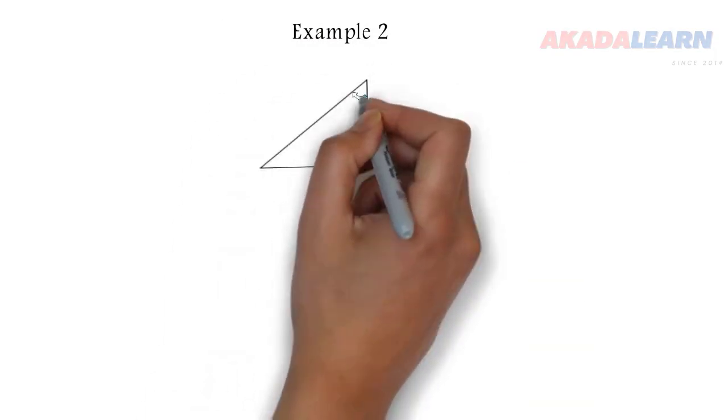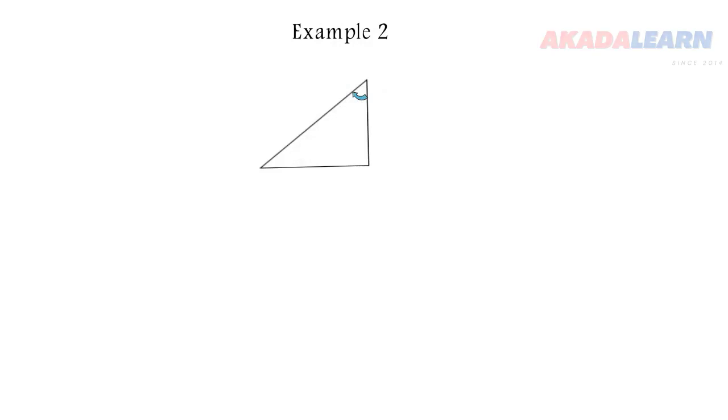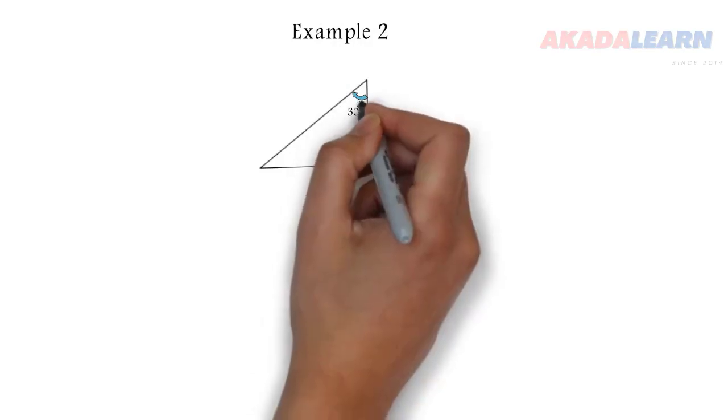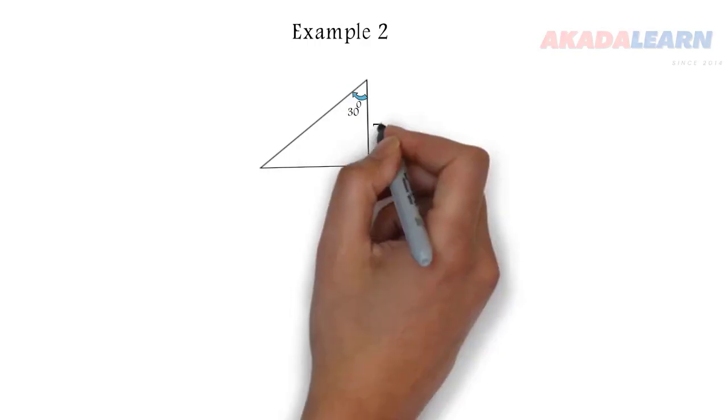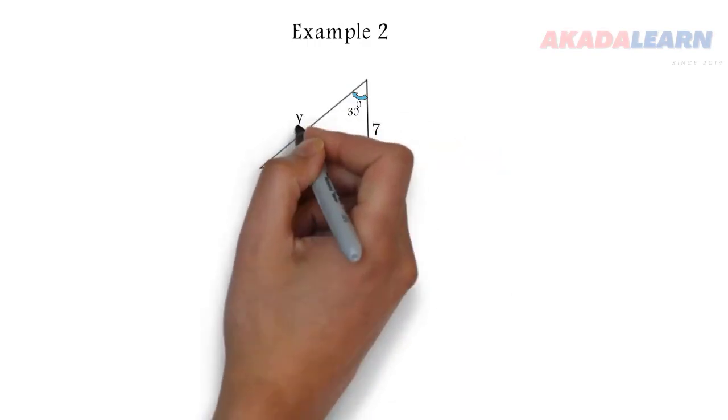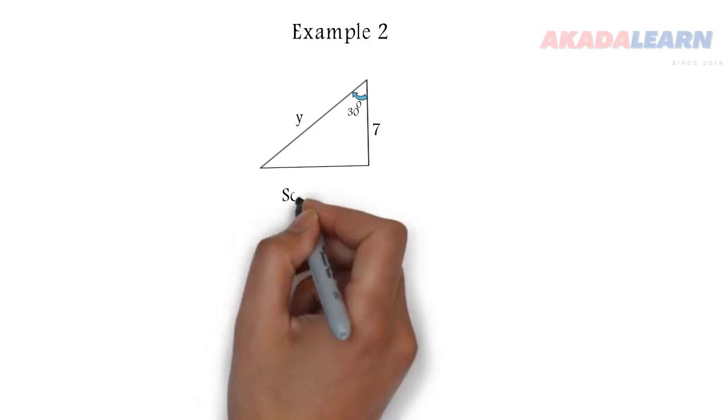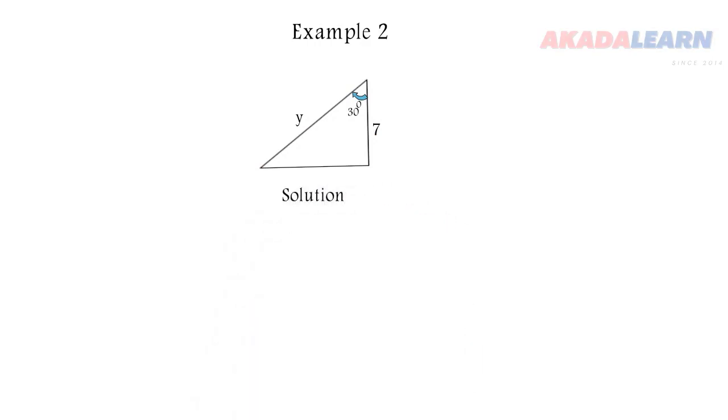We have another figure there with angle 30. We have our hypotenuse to be y and our adjacent is seven. We want to find the value of y.